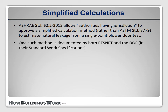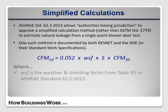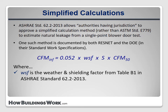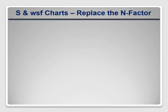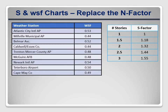In this lesson, I'll use the simplified calculation method. It states that the infiltration rate at natural conditions can be estimated as: CFM infiltration equals 0.052 times WSF times S times CFM 50. In this equation, WSF is the weather and shielding factor from table B1 of standard 62.2; S is a factor accounting for the height of the building from table X1; and CFM 50 is the blower door test result at 50 pascals. For our example house, the weather and shielding factor is 0.48, and the S factor is 1 because it's a one-story house. If it were two stories, the S factor would be 1.32.